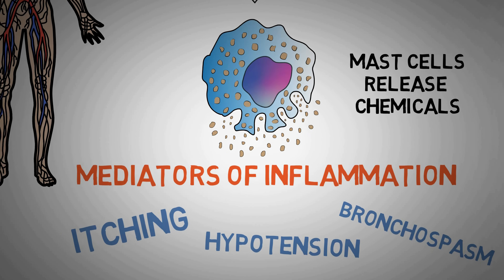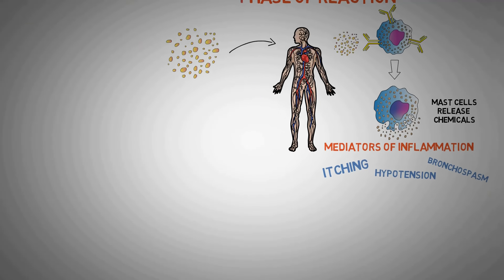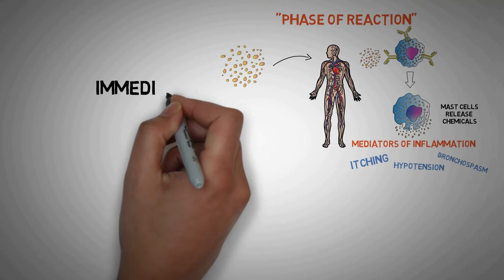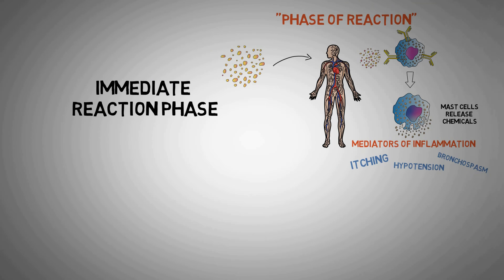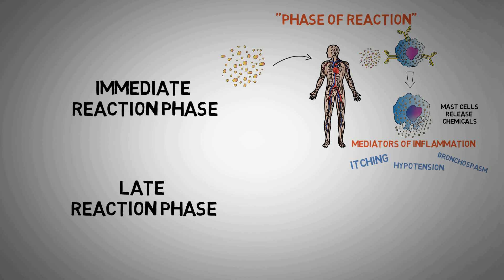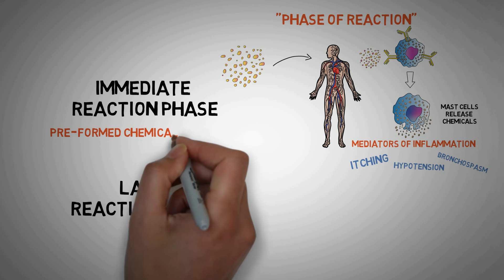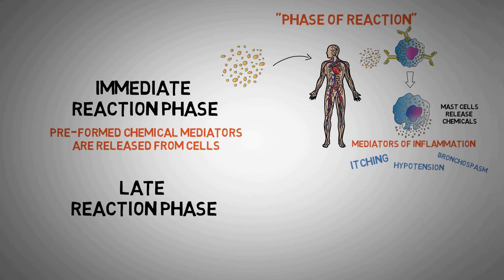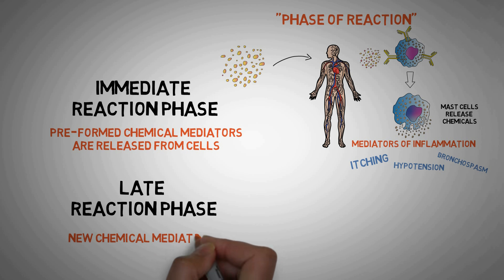The reaction phase is further subdivided into two main phases: the immediate reaction phase, which develops in minutes after repeated exposure to the allergen, and a late reaction phase, which develops minutes to hours after exposure. The basic difference is that in the immediate reaction phase, the chemicals already formed and stored inside the mast cells are released, whereas in the late phase, new chemicals are synthesized which maintain the hypersensitivity reaction for hours.